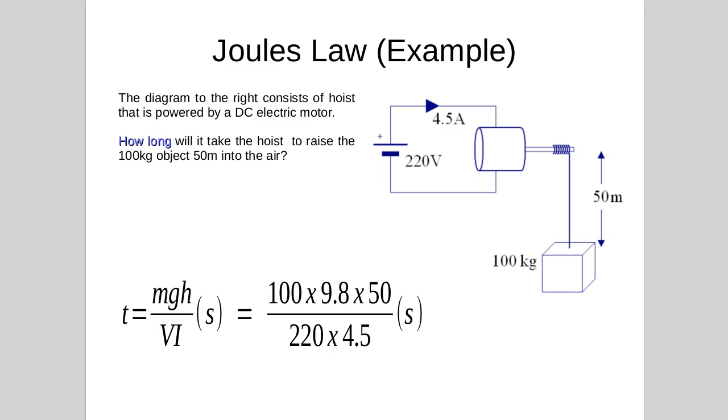Our equation becomes t equals 100 kilograms times 9.8 meters per second squared times 50 meters, divided by 220 volts times 4.5 amps. And that gives us 49.5 seconds.